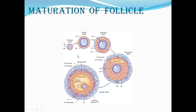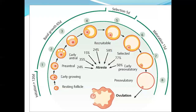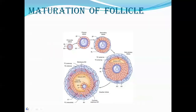Looking at follicle maturation: initially in the primordial follicle there is a central primary oocyte arrested at prophase 1 of the first meiotic division, surrounded by a single layer of granulosa cells and outside it the basal lamina. About 7 billion primordial follicles are present when a woman develops in prenatal life.